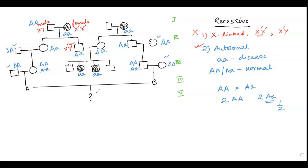The question asks: in the fifth generation, what is the probability of the child being affected? That means the child must have genotype 'aa'. For the child to be 'aa', individuals A and B in the fourth generation must each carry at least one small a allele.